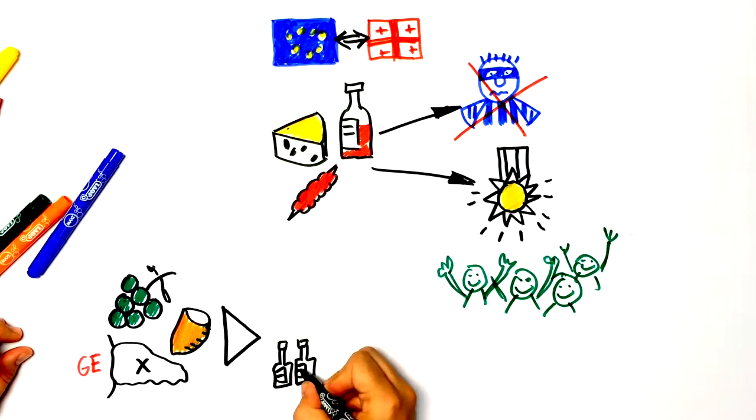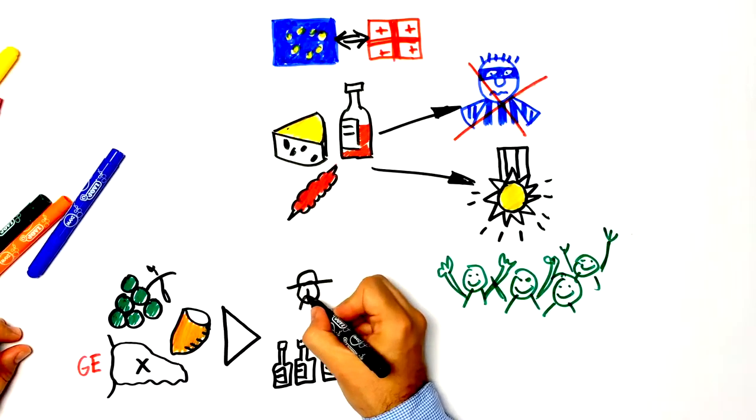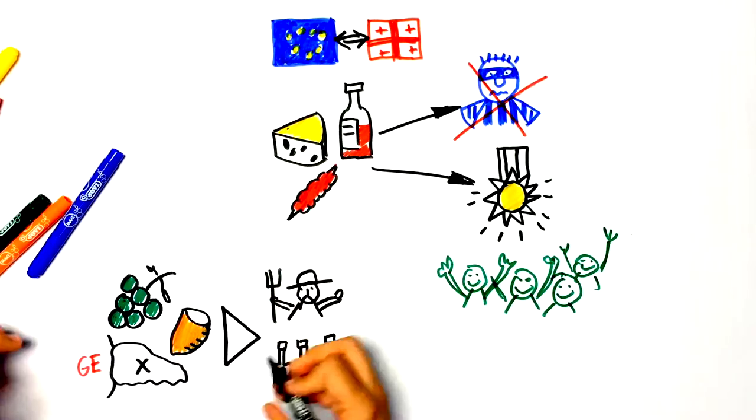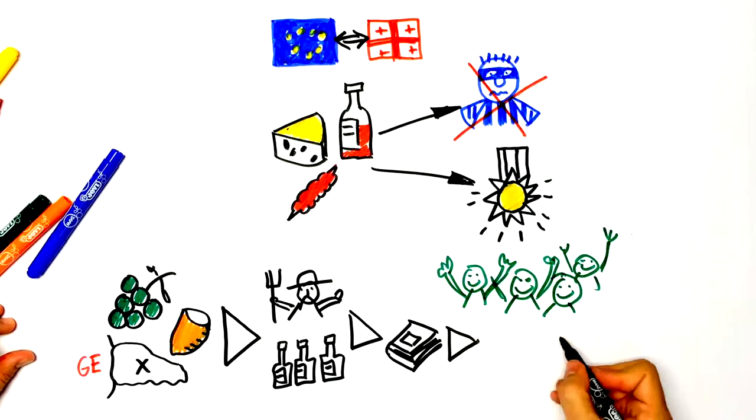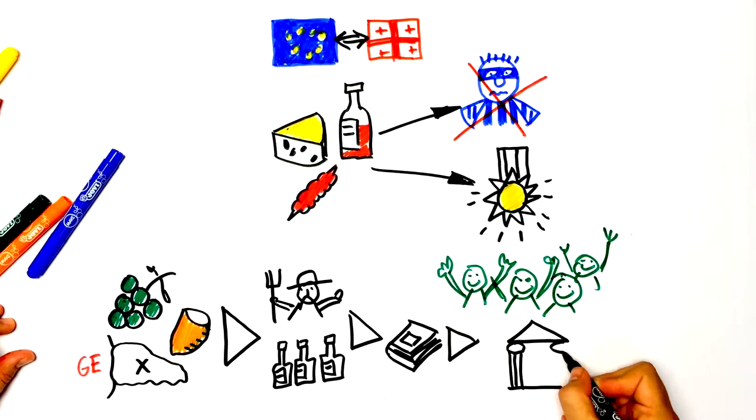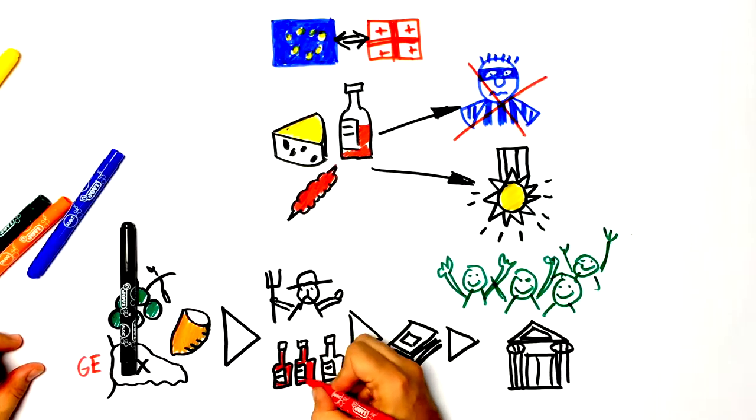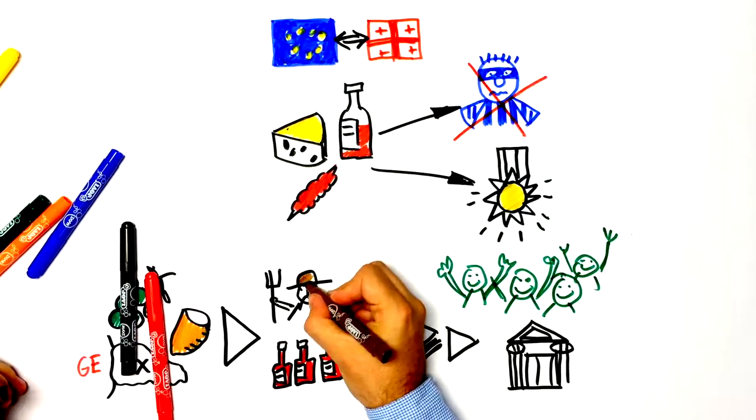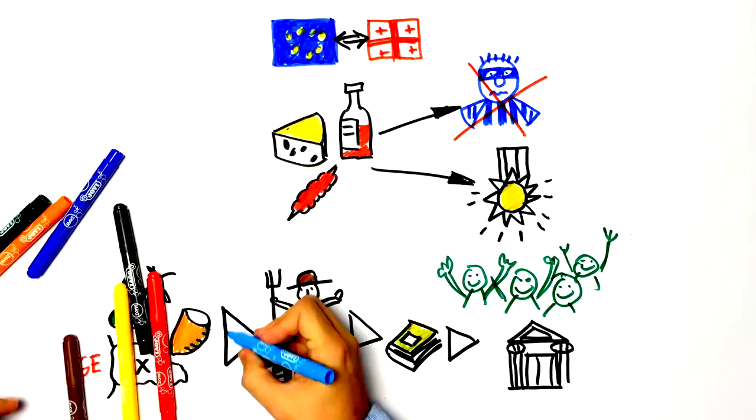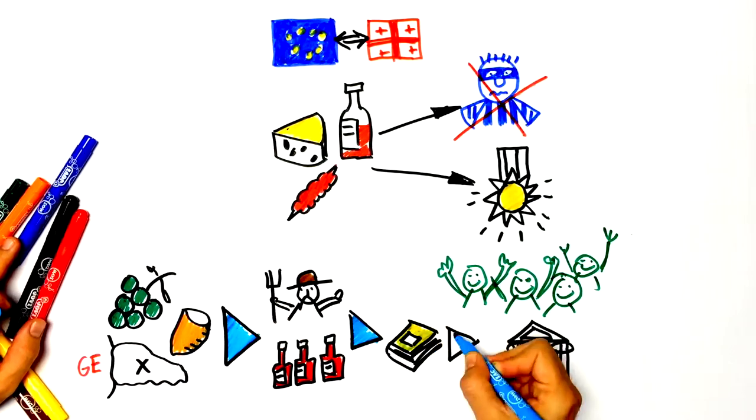Then you need the whole sector, meaning the industry but also the farmers, to decide to agree jointly on what will be the specifications of these products. And these specifications will be afterwards recognized by the state. In the case of Georgia, by Sakpatenti and by the Ministry of Agriculture. So after fulfilling all these stages, the product will be protected.